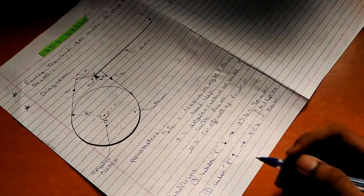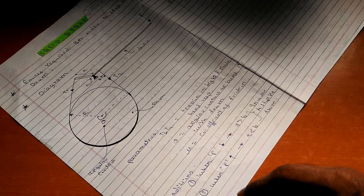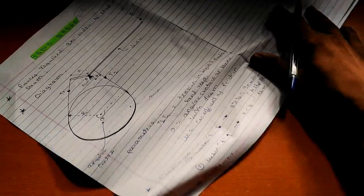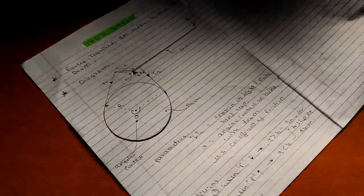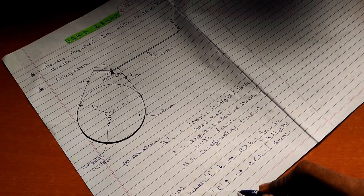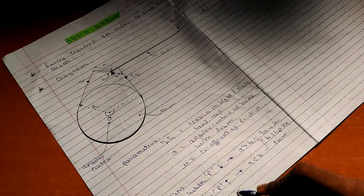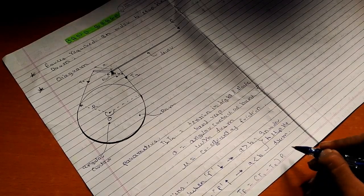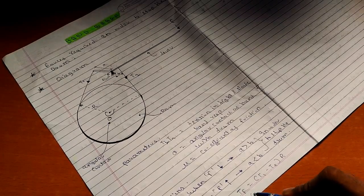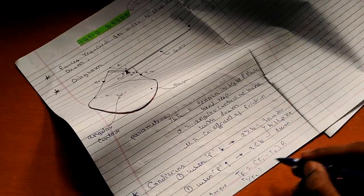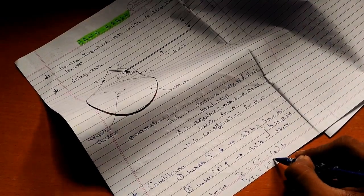Now let us see the various conditions, first and second, and also the braking torque. Braking torque would be tension T1 minus tension T2 into the radius R, that is T1 by T2 equals to e raised to mu theta.